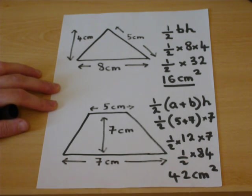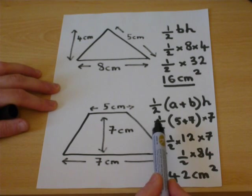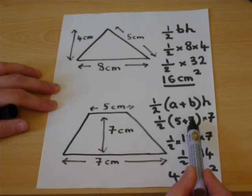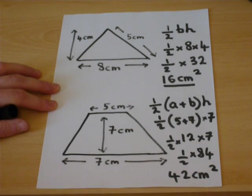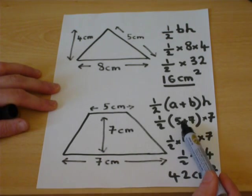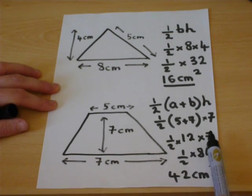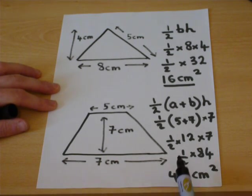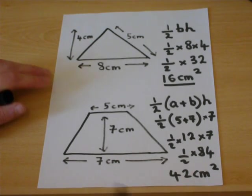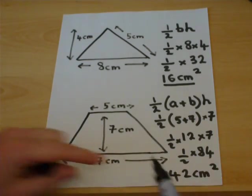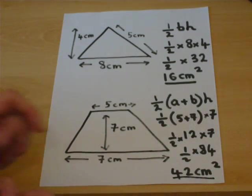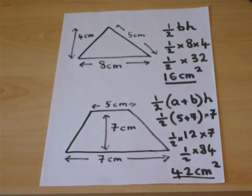To find the area, we have a half times a plus b times the height. We add the five and the seven to get twelve. Twelve times seven is eighty-four. Then we half the eighty-four to get forty-two centimeters squared. That is the way we can find the area of a trapezium.